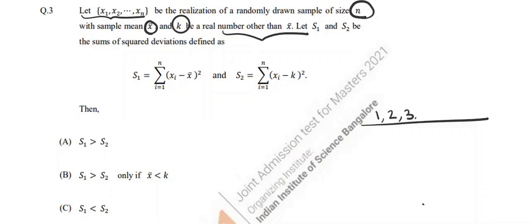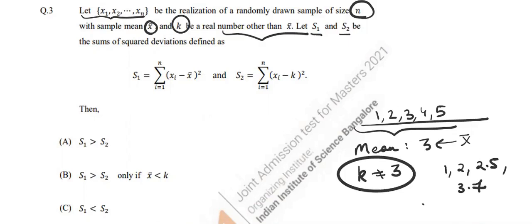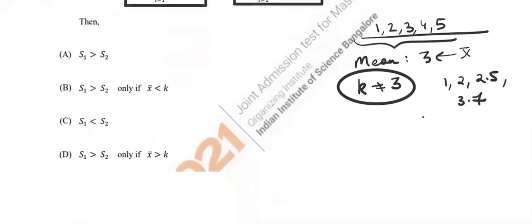For example, if you have the numbers 1, 2, 3, 4, 5, the mean is 3. So if x̄ is 3, then k can be anything but 3 — it can be 1, 2, 2.5, 3.7, anything except 3. S1 and S2 are the sum of squared deviations: S1 from the mean, S2 from any real number k other than the mean.